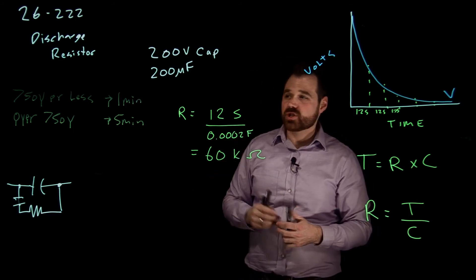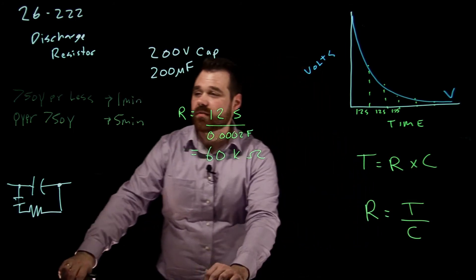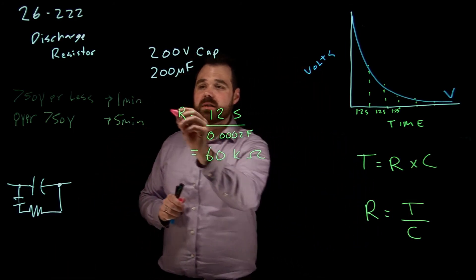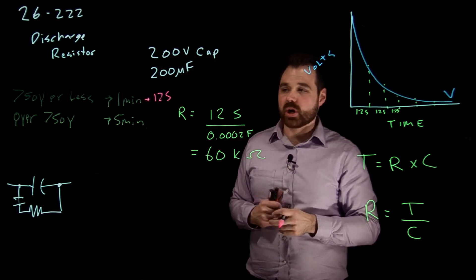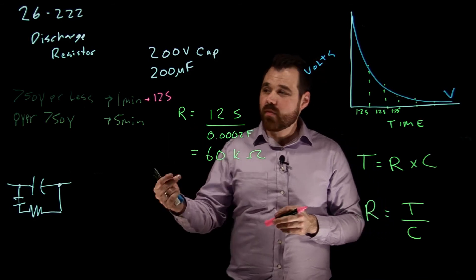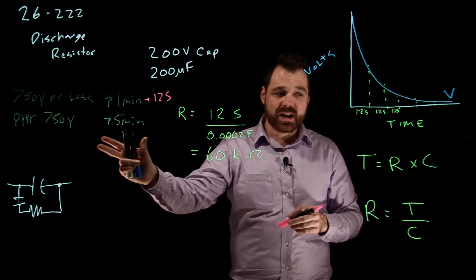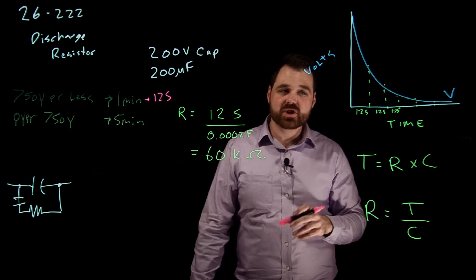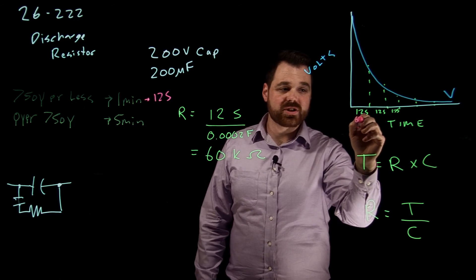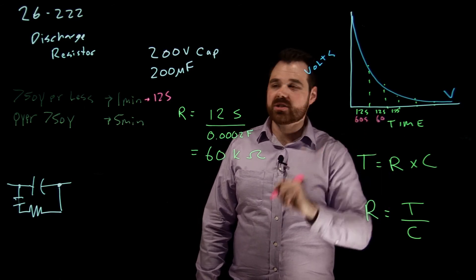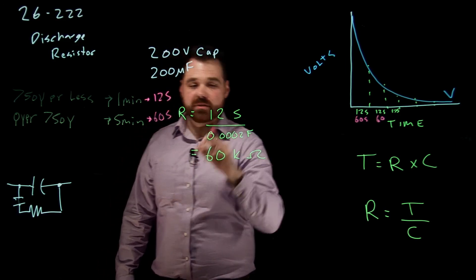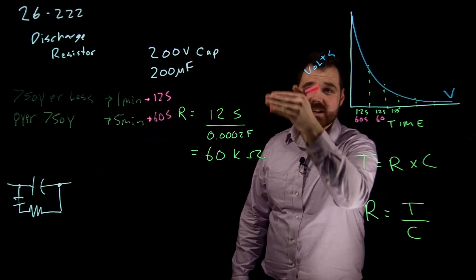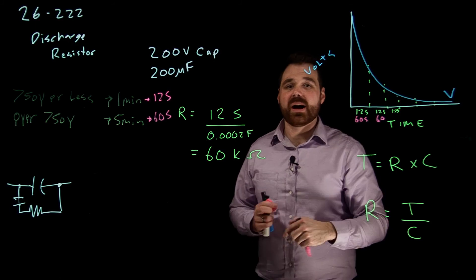Now how this would change - so if I'm talking 750 volts or less, and it's one minute, we say that's 12 seconds per time constant. If I was over 750 volts, and I had five minutes in order to discharge, now that would be 60 seconds per time constant. So I would just change this formula, and now it would be 60 divided by the size of my capacitor.